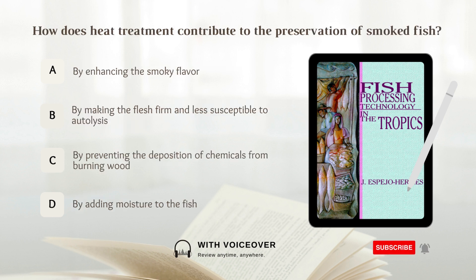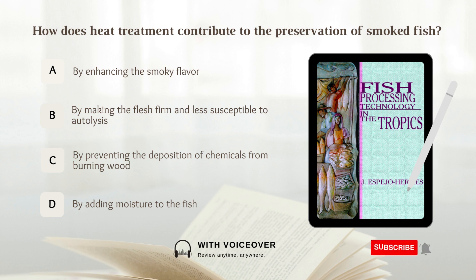How does heat treatment contribute to the preservation of smoked fish? A. By enhancing the smoky flavor. B. By making the flesh firm and less susceptible to autolysis. Answer: B. By making the flesh firm and less susceptible to autolysis.